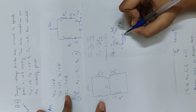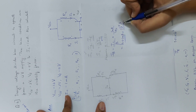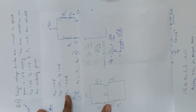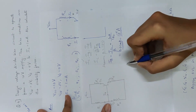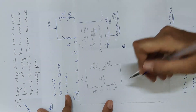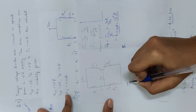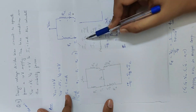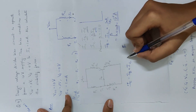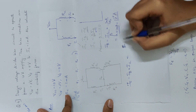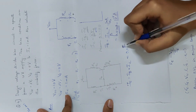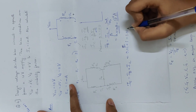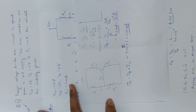Now we have IB. The IE equation is IB plus IC. IB is 0.01 mA and IC is 1 mA, so IE equals 1.01 mA — that is the emitter current.